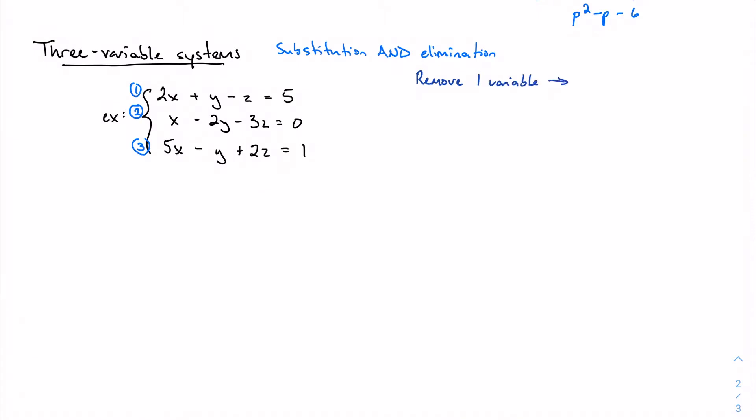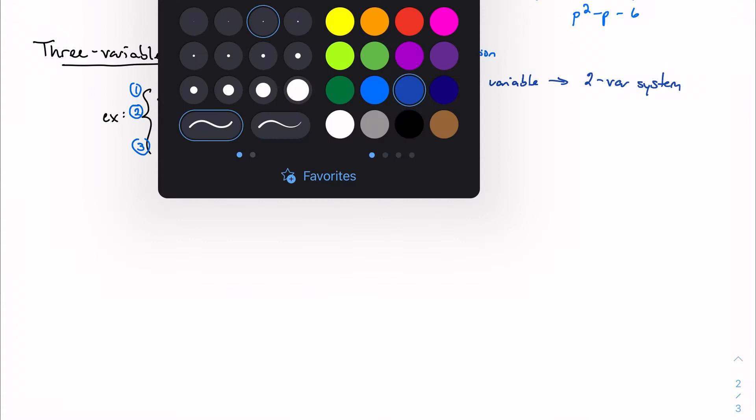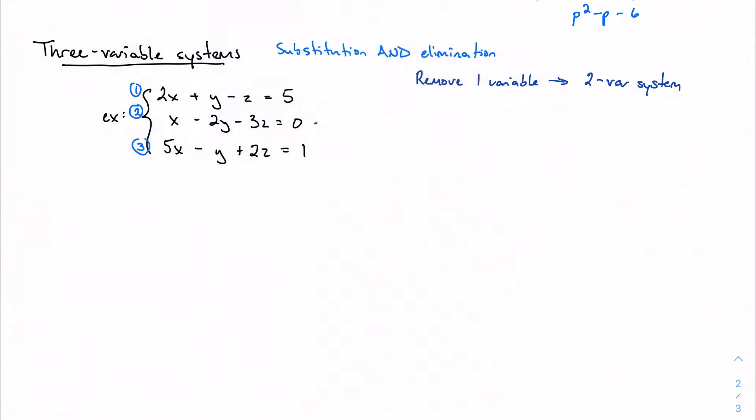And this is going to produce a two variable system, which we know how to deal with. So I think the easiest thing to do would be to do this by substitution. And we can start by rearranging equation two, solving it for x.